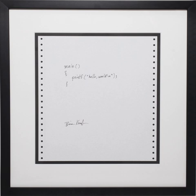Computer programs may be categorized along functional lines. The main functional categories are application software and system software. System software includes the operating system, which couples computer hardware with application software. The purpose of the operating system is to provide an environment in which application software executes in a convenient and efficient manner. In addition to the operating system, system software includes embedded programs, boot programs, and micro-programs. Application software designed for end users has a user interface. Application software not designed for the end user includes middleware, which couples one application with another. Application software also includes utility programs. The distinction between system software and application software is under debate.